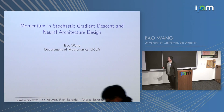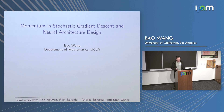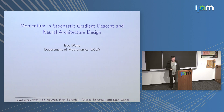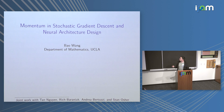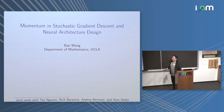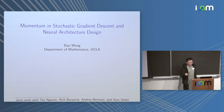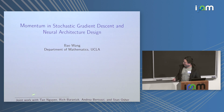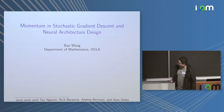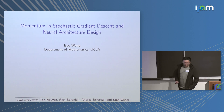Today I will talk about momentum in stochastic gradient descent and neural network design. Momentum is a very basic and fundamental technique for stochastic gradient descent. In gradient descent, it has been well understood. However, in stochastic gradient descent, we do not fully understand this yet. We will also talk about how we can use this momentum idea to develop new neural architectures — a mathematically principled approach. This is joint work with collaborators at Rice University and my personal mentor, Professor Stan Osher, who provided lots of crucial ideas.